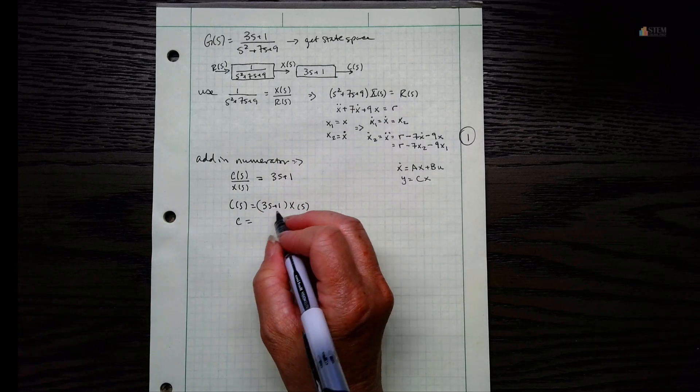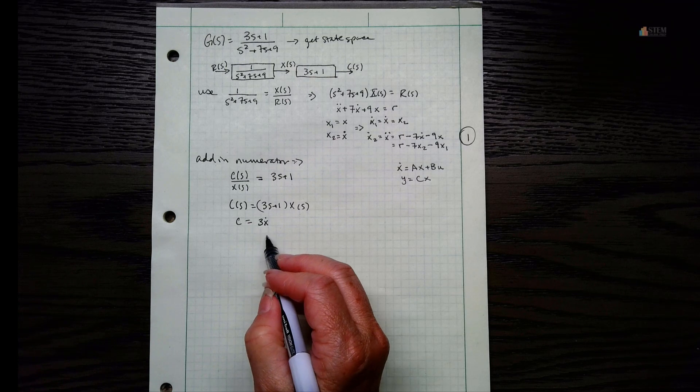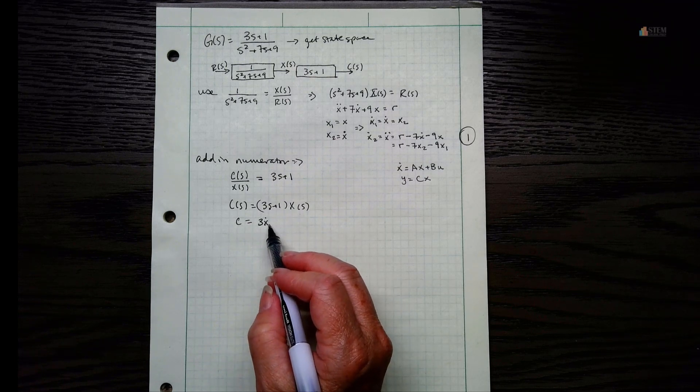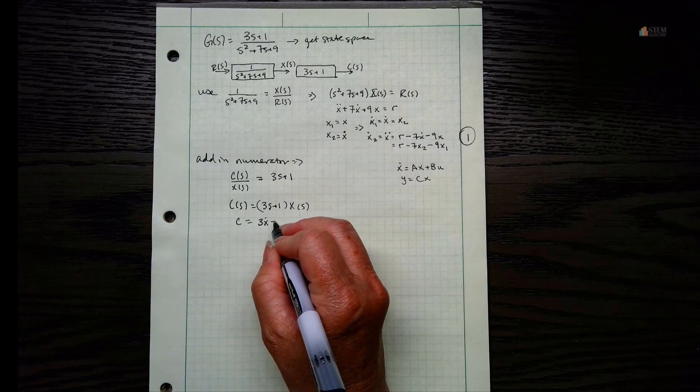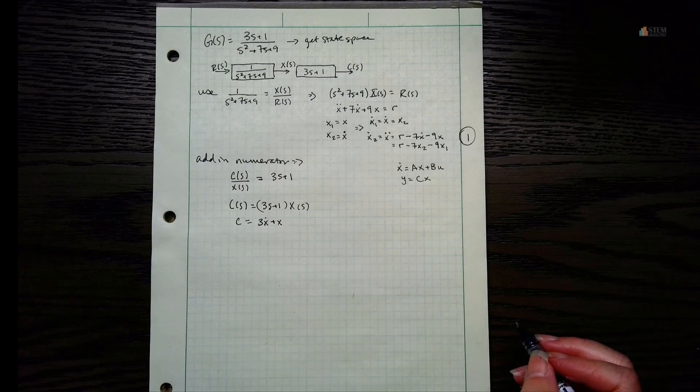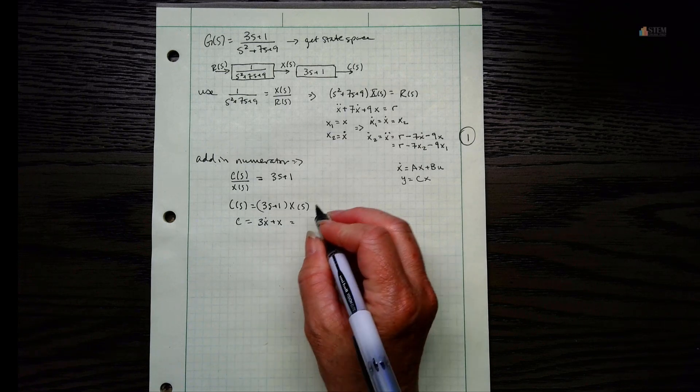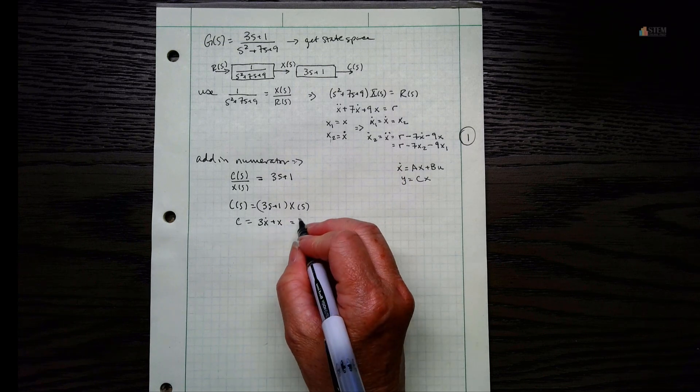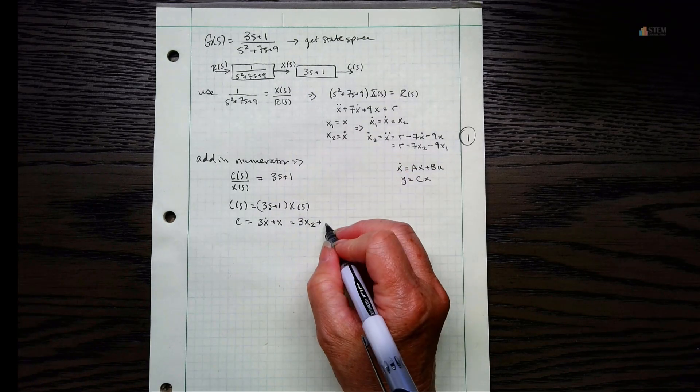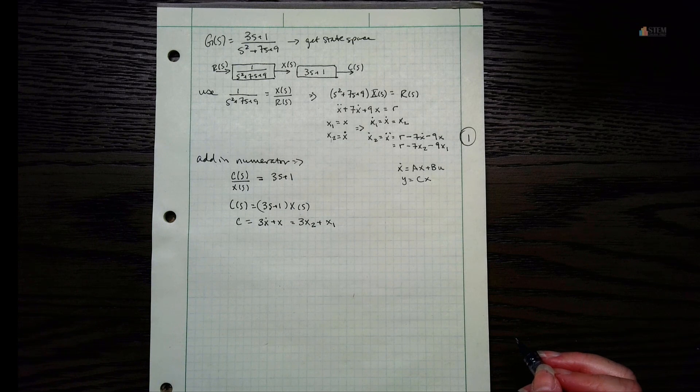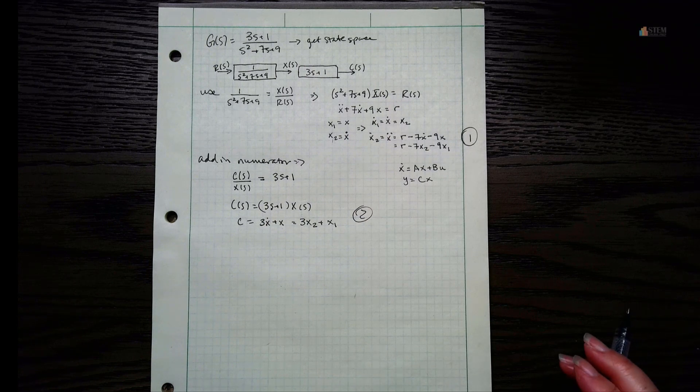So C then is going to be 3SX, so that is the first derivative of X - 3X dot - because the S times the X of S gives you that first derivative of X. And then here we've got 1 times X, so that'll just give us plus X. Now I don't want to leave these in terms of X and X dot. So I need to use these variables here. So we're going to replace X dot with X2, and then X gets replaced with X1. Now we've got what we need. Let's call this 2 here to get the actual state space representation.